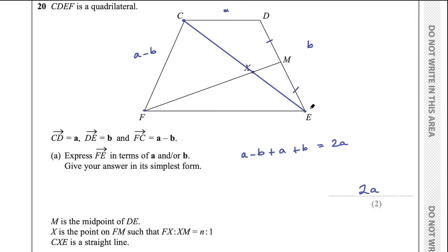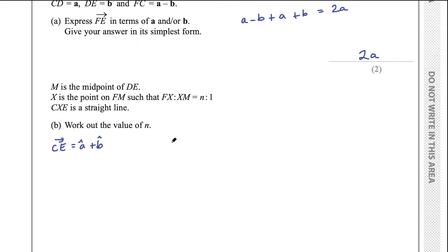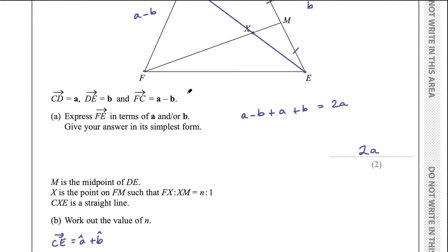So we've said the vector CE is a plus b. And because we know CXE is a straight line, therefore CE is some multiple of CX. All right, we know that from our vector rules. Inversely, we can also say it the other way around. We can say CX is some multiple of CE. Now, this is going to be a fraction, right? Because CX is smaller than CE, but we can still say it's some scalar multiple of CE. So we have an expression for CX.